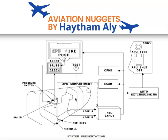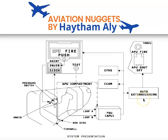On the ground, an APU fire indication alerts ground personnel that an APU fire has occurred. A horn will sound from the nose wheel well, and on the external electrical power panel, an APU fire indication will illuminate as a red light. You can also shut down the APU from the pushbutton on the external power panel. So on the ground only, we have an auto-extinguish function that generates an automatic APU shutdown and auto-discharge of the fire bottle.